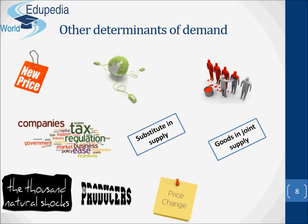Expectations of future price changes: if price is expected to rise, producers may temporarily reduce the amount they sell. They are likely to build up their stocks and only release them onto the market when the price does rise. At the same time, they may install new machines or take on more labor, so that they can be ready to supply more when the price has risen. Finally, the number of suppliers: if new firms enter the market, supply is likely to increase.